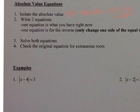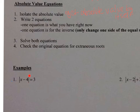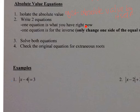Let's take a look at number one. We have the absolute value of x minus four, inside the absolute value symbol, equal to three. First I check to see if the absolute value is isolated — and it is, meaning there is nothing else on the left side of the equal sign with the absolute value. The next step is to write two equations: one exactly as it is now, and one for the inverse.